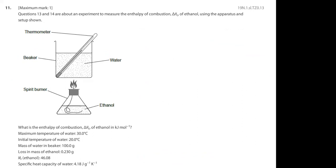Focus on the question given to us. It's an experiment to measure the enthalpy of combustion — that means ΔHc — of ethanol using the apparatus and setup shown below. This is a simple setup where ethanol is taken as a fuel and burned. After combustion, it releases certain energy. That heat is supplied to water in a beaker. The thermometer measures the temperature, and the increase in temperature along with the masses of ethanol and water gives the heat transferred.